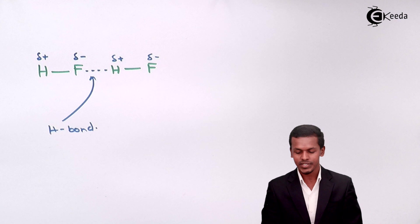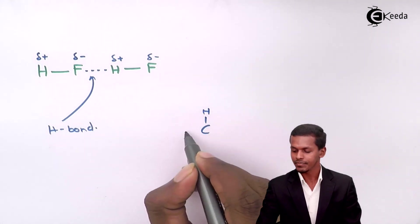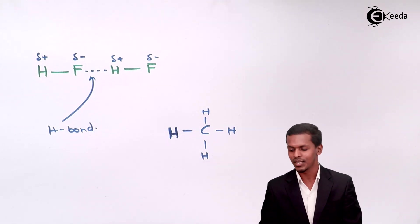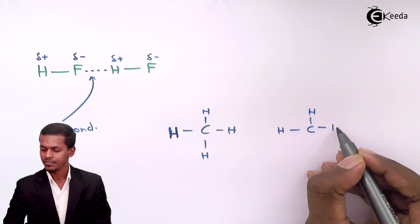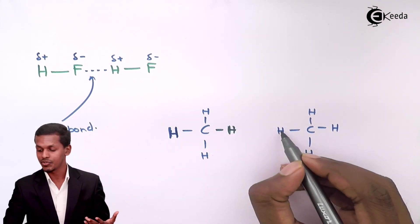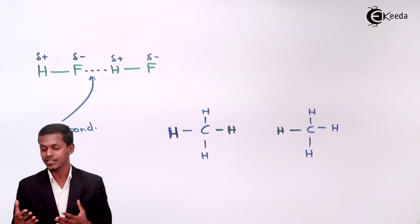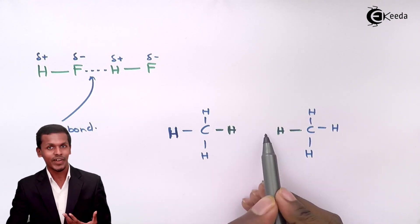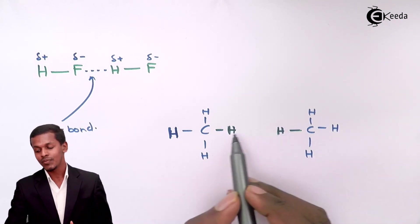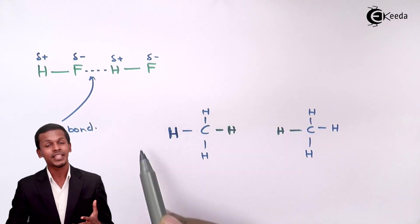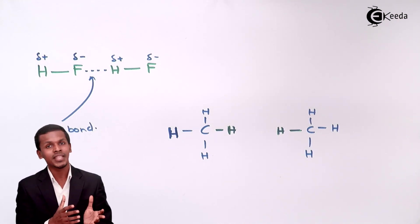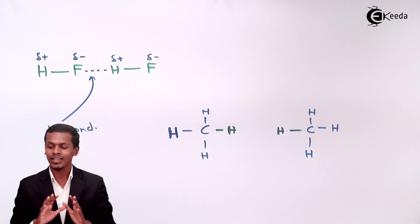Hydrogen bonding cannot be observed in just any molecule. For example, if we take methane surrounded by another methane molecule, the hydrogen bond present here is between carbon and hydrogen. But we cannot say there will be a force of attraction between them, because the methane molecule consists of carbon which does not have a very large electronegativity difference with hydrogen, so one methane molecule will not have an attraction towards another methane molecule.